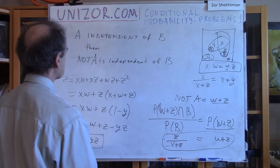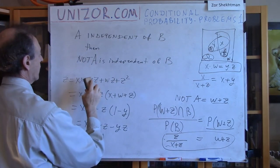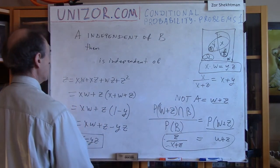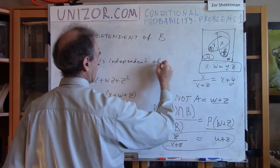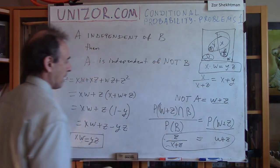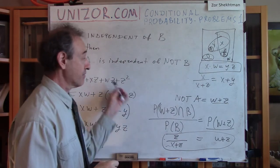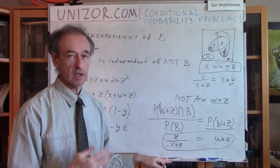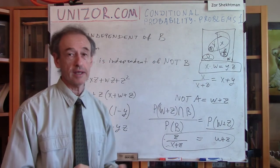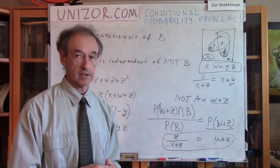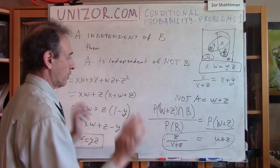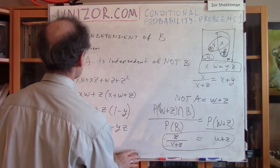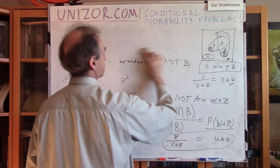Problem number three is very much like problem two. If A is independent of B, then A is also independent of not-B. All you have to do is express this independence as an equation, use plain algebra, and you will get exactly the same result. It's presented in the notes. No time spent on the third problem.